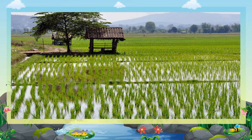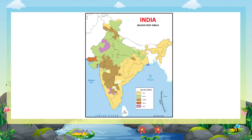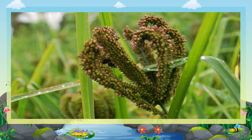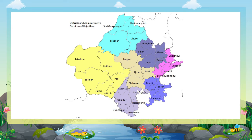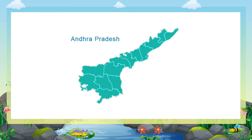Wheat is the second most important food crop of India. It is widely grown in western Uttar Pradesh, Punjab, Haryana, Madhya Pradesh, Gujarat, and Rajasthan. It is the staple food of north India. Millets include jowar, bajra, and ragi; these are grown mainly in Rajasthan, Gujarat, Karnataka, and Andhra Pradesh.